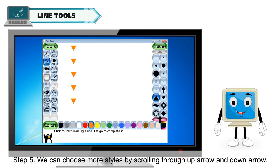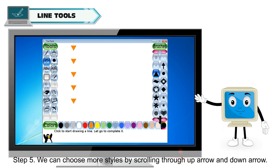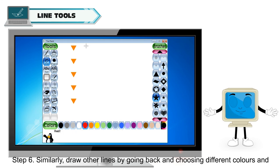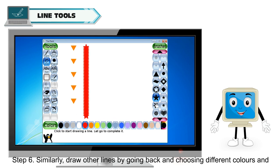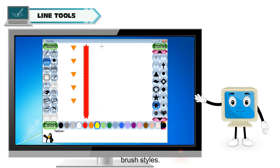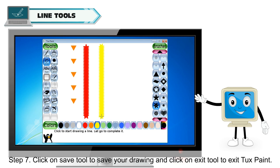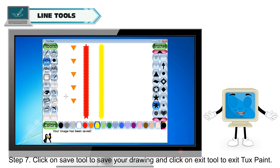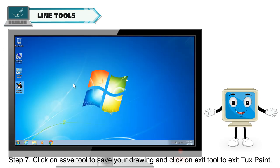Step 5: We can choose more styles by scrolling through the up arrow and down arrow. Step 6: Similarly, draw other lines by going back and choosing different colors and brush styles. Step 7: Click on the Save tool to save your drawing, and click on the Exit tool to exit Tux Paint.